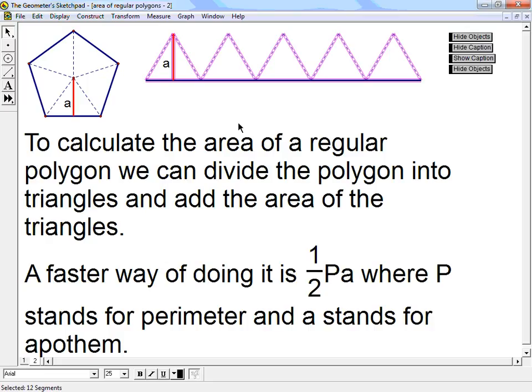To calculate the area of a regular polygon, we can divide the polygon into triangles and add the area of the triangles. A faster way of doing it is one-half times P times A, where P stands for perimeter and A stands for apothem.